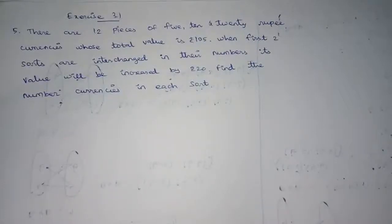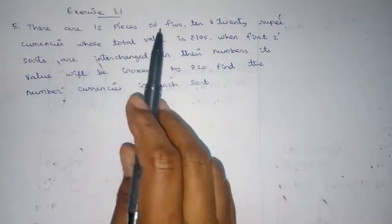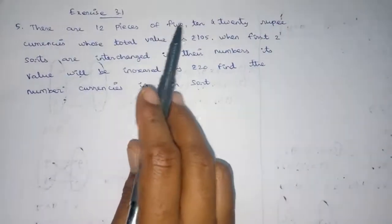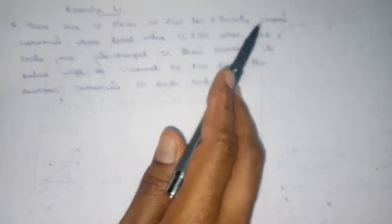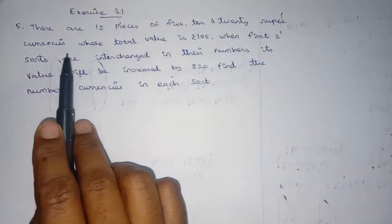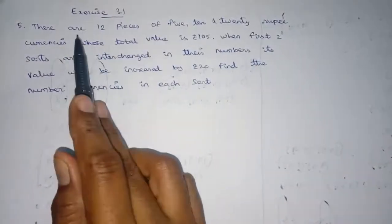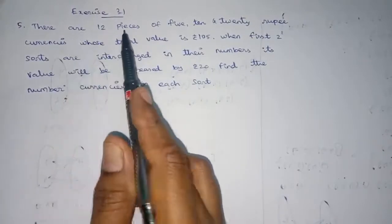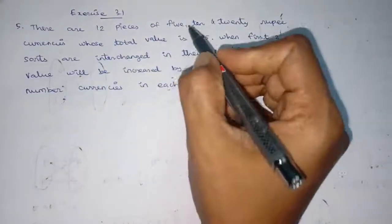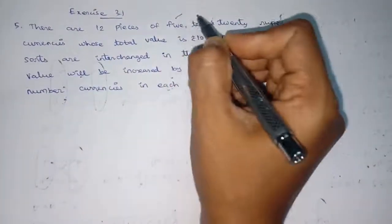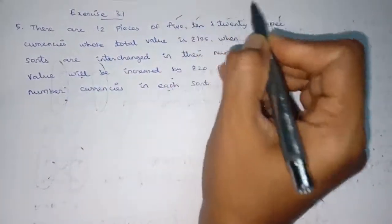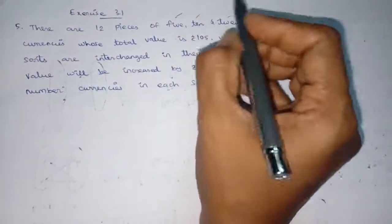We will see the 5th sum of XS3.1. There are 12 pieces of 5, 10, and 20 rupee currencies.